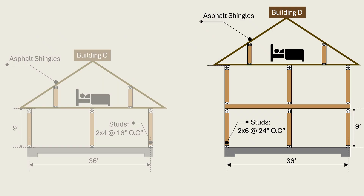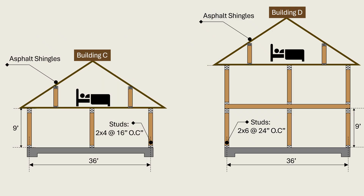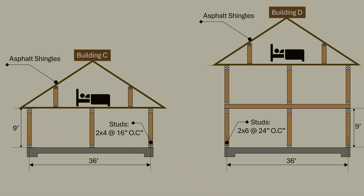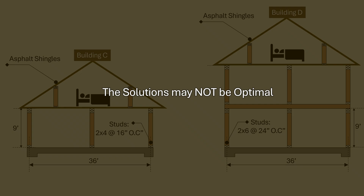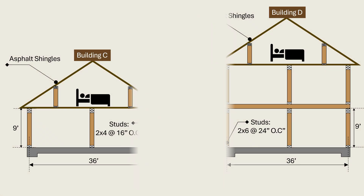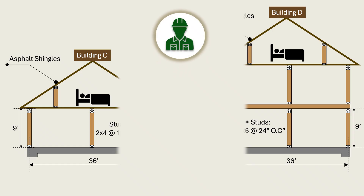While these prescriptive solutions mean the designer does not need to consult an engineer, the solutions may not be optimal. It is possible the building is in a zero-to-moderate snow load region with a decent amount of interior bearing walls, meaning the load at each first-floor bearing wall is not as high as the prescriptive code anticipates. In this case, the most optimal solution is to consult a civil engineer or architect to verify the adequacy of the studs as originally intended, without being bound by the limits in footnote C.